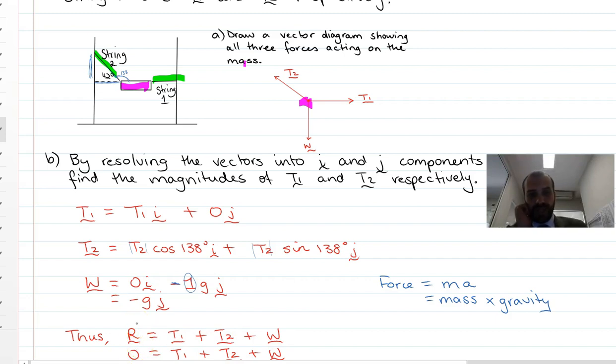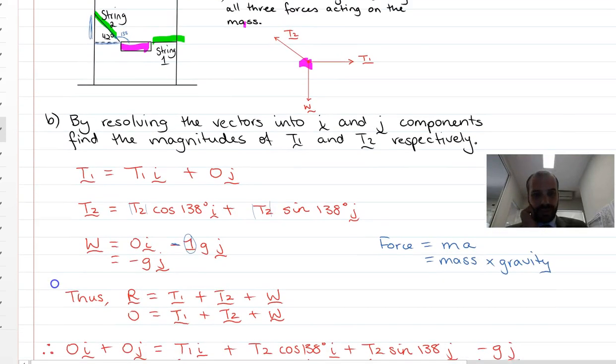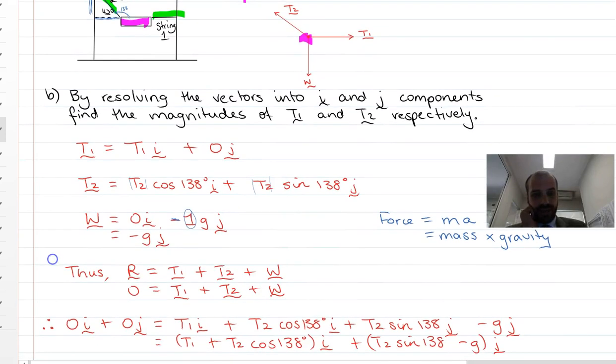Now let's put in what we know. So we can now say that 0i plus 0j, because there's our resultant vector, is equal to now t1 in the i component. So it's equal to that. We're not going to need anything for the 0j. It's equal to t2, which is t2 cos 138i plus t2 sine 138j minus gj.